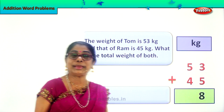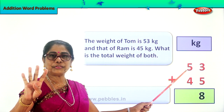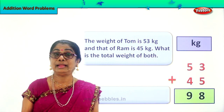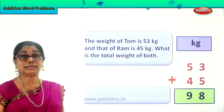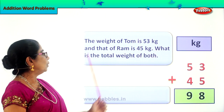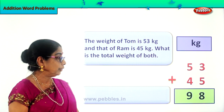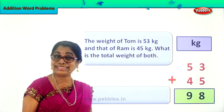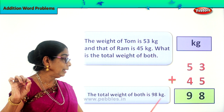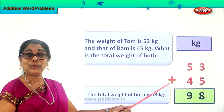5 plus 4 — after 5: 6, 7, 8, 9 — 5 plus 4 is 9. The weight of the two boys is 98 kg. The question is what is the total weight of both? The total weight of the two boys is equal to 98 kg. So we write down: the total weight of both is 98 kg. Did you enjoy addition word problems about weight?